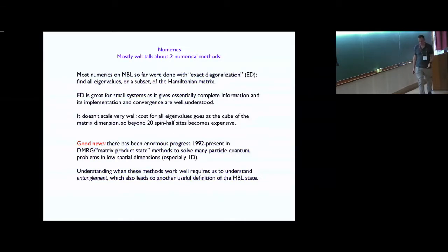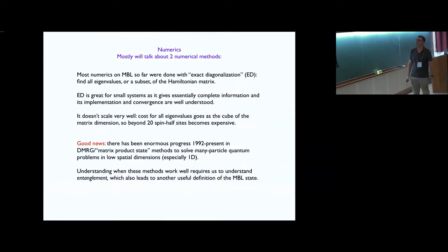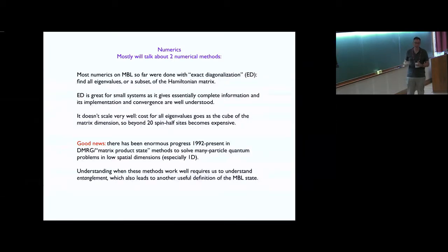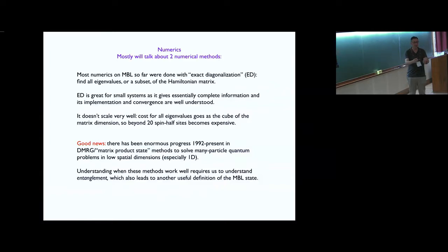A lot of the calculations we do in hard quantum systems, where we don't find a clever trick like quantum Monte Carlo, are done with exact diagonalization, which is robust — it's hard to make a mistake — but you can only do it for very small systems. For n spin-half sites, the Hamiltonian matrix is 2^n by 2^n, which is enormous. A lot of important work on MBL is done with exact diagonalization, but 20 sites is not always the thermodynamic limit, and that's one reason why there are big disagreements about the nature of the MBL transition.